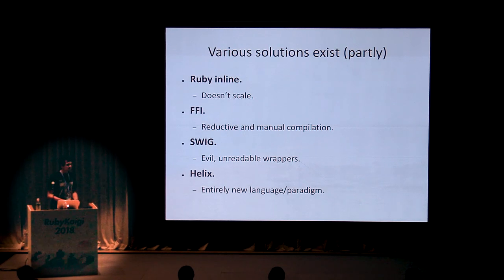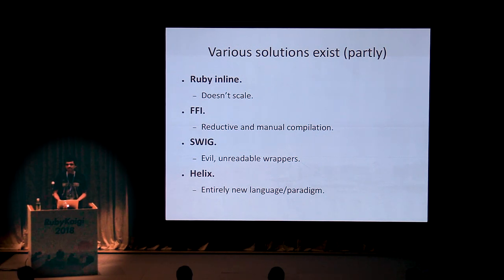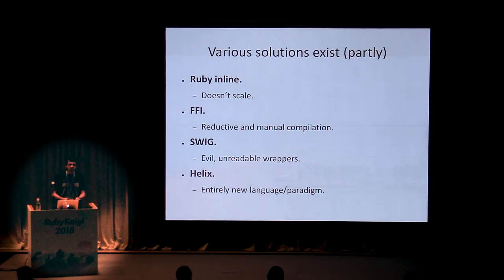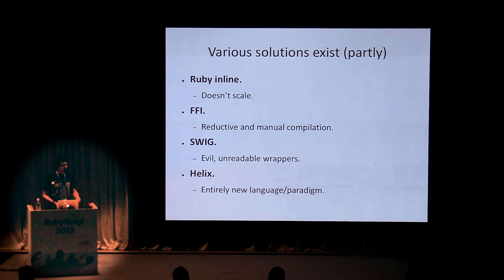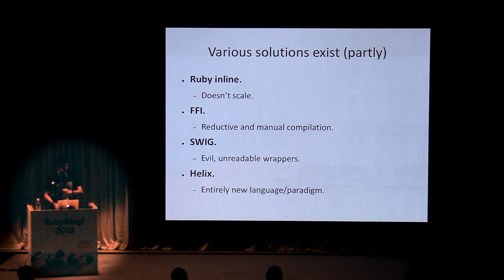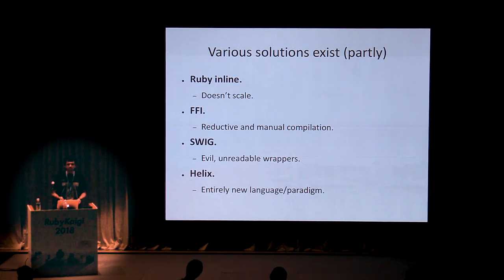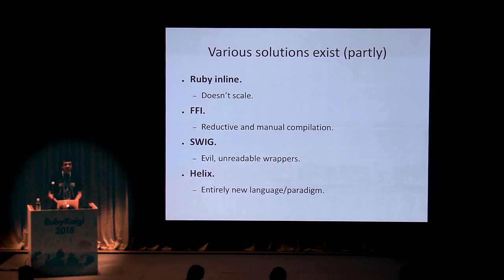Various solutions for this purpose exist. The first one is Ruby-inline, which allows you to write C code inside a simple Ruby string, but it does not scale because all the code needs to reside inside one single string. FFI is quite reductive and requires manual compilation every time, and you need to read a lot of docs. SWIG is very unreadable if your APIs grow over a certain limit. And Helix is a new way of writing these extensions using the Rust programming language, but it's an entirely new language and paradigm that you need to master.